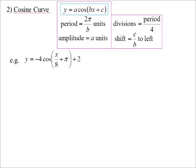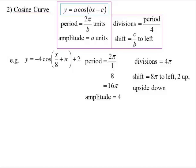All right. So, what's happening with this one? Period. 2π/(1/8). So, 16π is the period. The amplitude is 4. Divisions. Period divided by 4. So, every 4π I'm going to mark off. There is a shift happening. 8π to the left, but also 2 up. And it's upside down, because it's a negative as well. Oh, we've got everything happening in this curve.